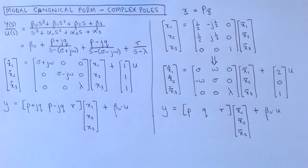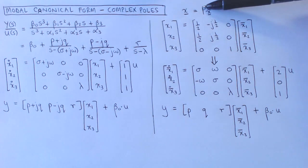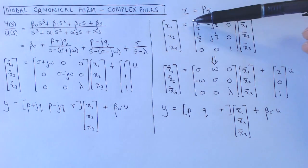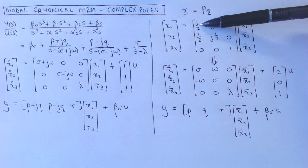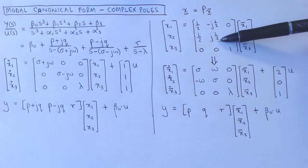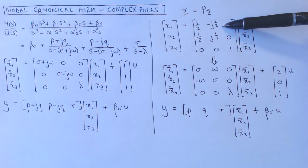In order to do this, we transform the states x to new states x bar according to a transformation. For the transformation matrix P, we choose the two-by-two block corresponding to the complex pole pairs to be a half, a half, minus j a half, and j a half, and the rest of the matrix similar to an identity matrix.